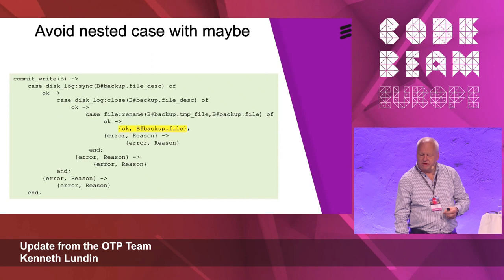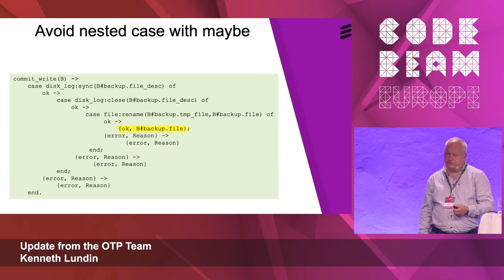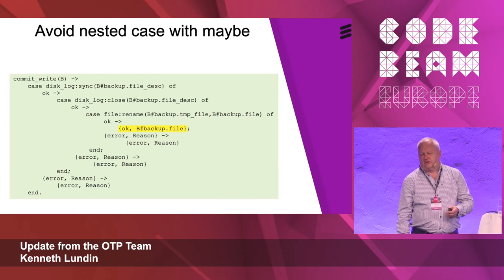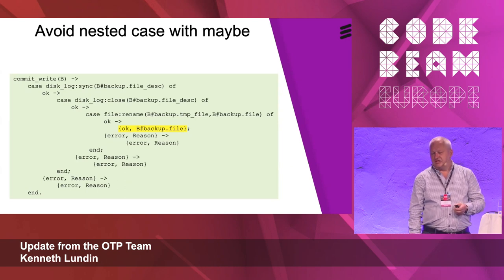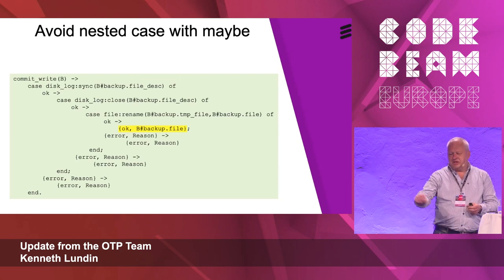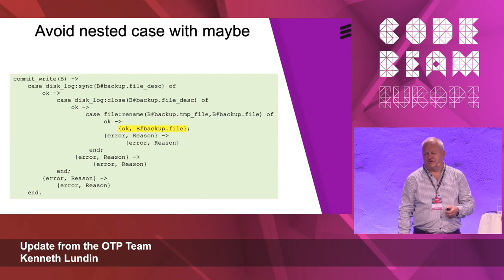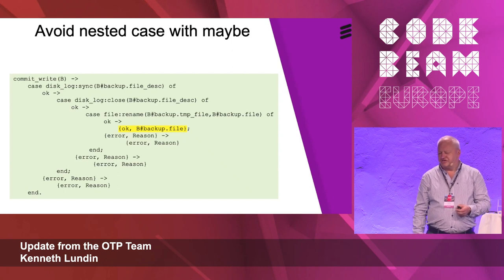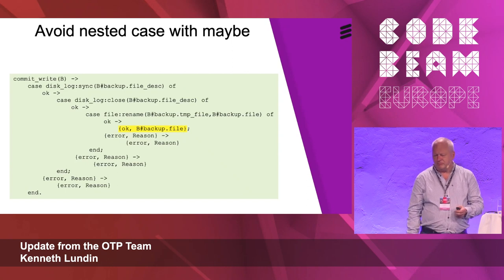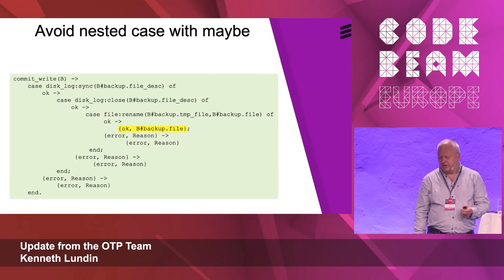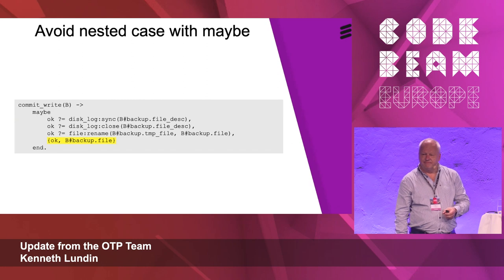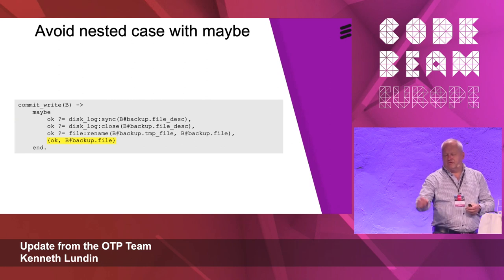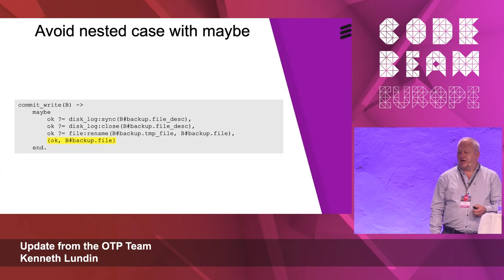The maybe construct can be used to avoid massive nested case statements. This is an ugly example of nested cases where the actual return value is buried in the middle. With maybe, you can write it cleanly — you just follow the flow and return the result at the end.